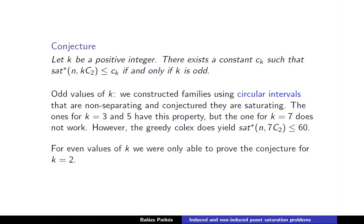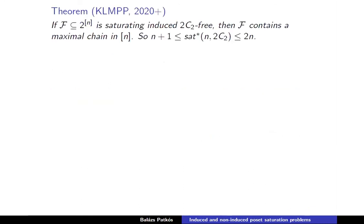For the even case, the situation is even less clear. We can prove that for k = 2, the induced saturation function of 2C_2 is indeed unbounded: specifically, any 2C_2-saturating family must contain a maximal chain, so it has at least n+1 sets. The upper bound of 2n is achieved by taking a maximal chain together with all singletons, which one can verify is 2C_2-saturating.